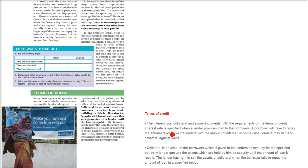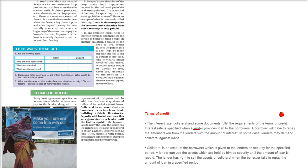The interest rate is specified when the lender or the bank provides money to the borrower. The person who is taking money is the borrower. The borrower will have to repay the amount taken from the lender with some amount of interest. In certain cases, lenders may demand collateral against these loans.